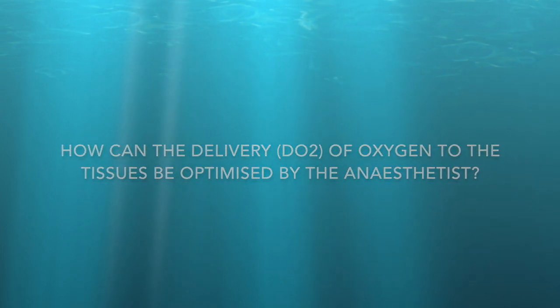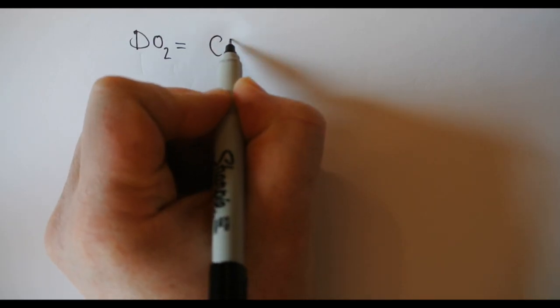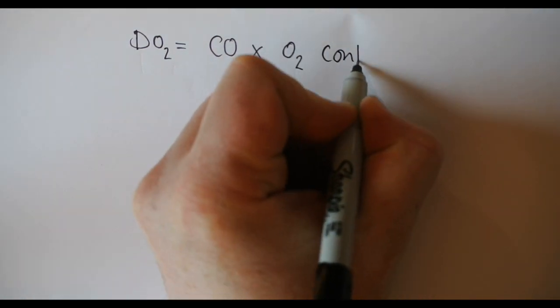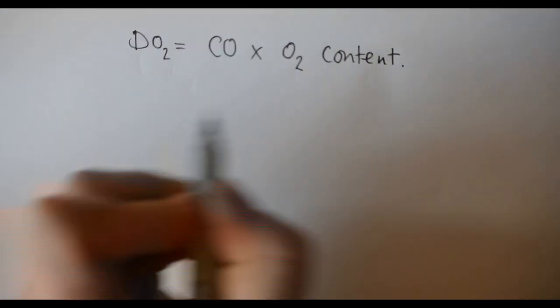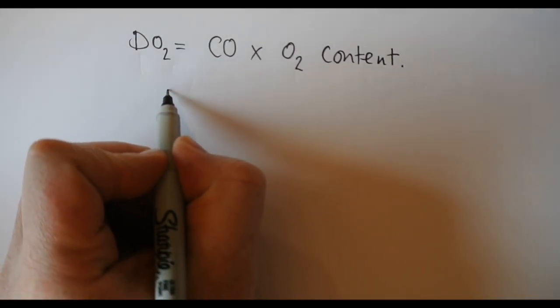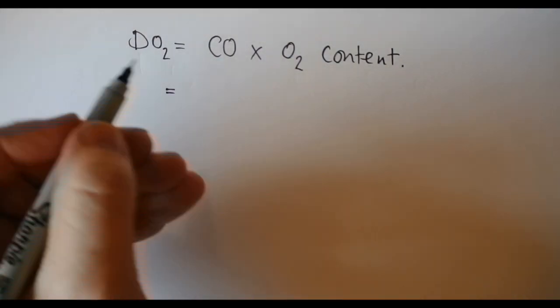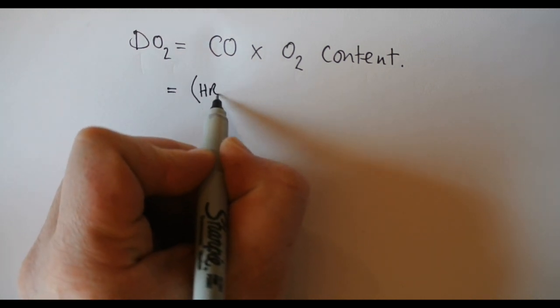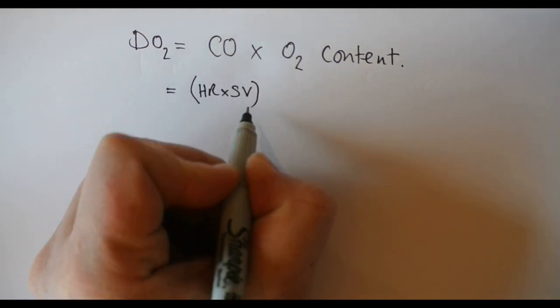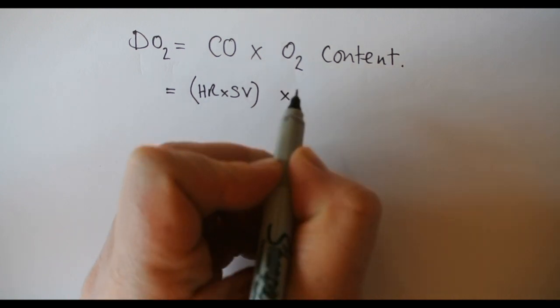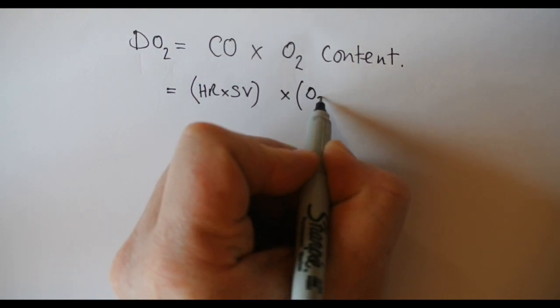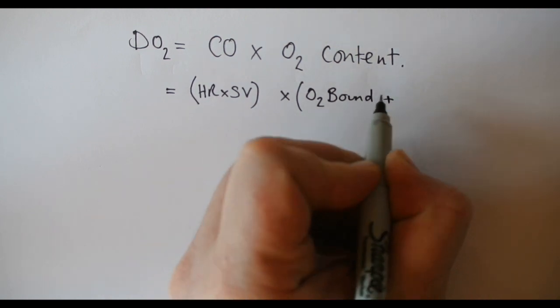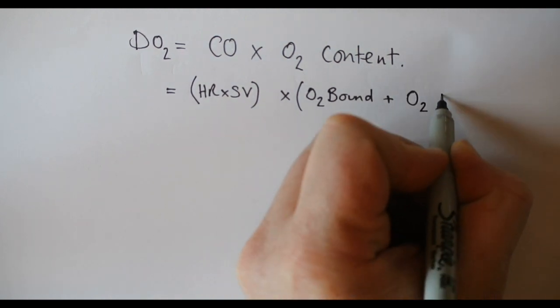In its simplest form, the oxygen flux equation talks about the delivery of oxygen to the tissues. That's a global kind of delivery and doesn't take into account regional differences in the tissues. It looks at two things: cardiac output and the oxygen content of the blood.